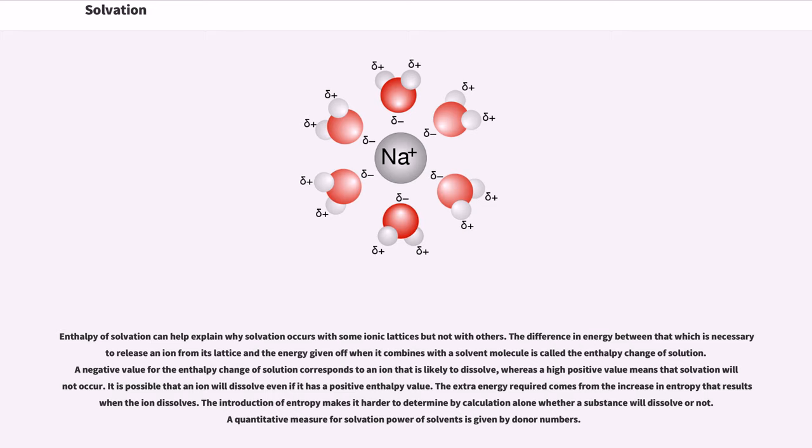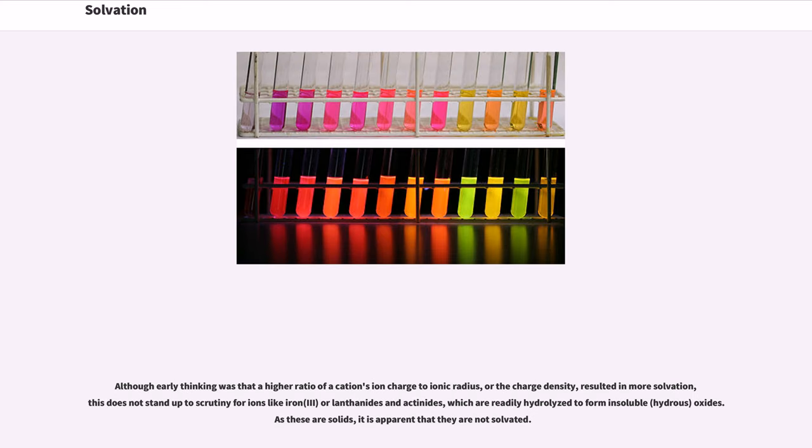A quantitative measure for solvation power of solvents is given by donor numbers. Although early thinking was that a higher ratio of a cation's ion charge to ionic radius, or the charge density, resulted in more solvation, this does not stand up to scrutiny for ions like iron or lanthanides and actinides, which are readily hydrolyzed to form insoluble oxides. As these are solids, it is apparent that they are not solvated.